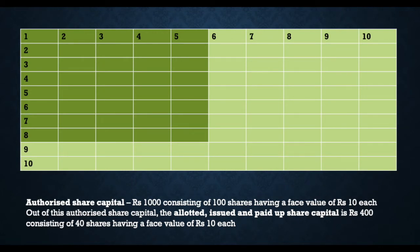Looking at this diagram, we can see there are 100 shares having a face value of 10 rupees each. That is the authorized share capital: 100 shares multiplied by 10 rupees per share equals 1,000 rupees. Out of these 100 shares, only 40 shares have been issued, meaning those 40 shares are actually owned by shareholders. The remaining 60 shares are in limbo — they have not come into existence yet. When the company issues fresh shares, the paid-up share capital will increase. So the authorized share capital is the maximum amount the company may raise through issuance of shares, while the paid-up share capital is the amount the company has actually raised through issuance of shares.